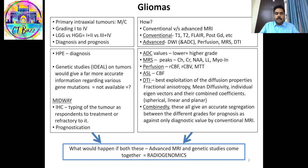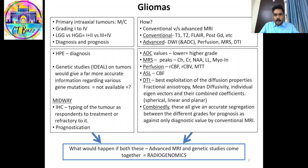Gliomas are the most common primary intraxial brain tumors, graded from grades 1 to 4, among which grades 1 and 2 belong to the low-grade category and grades 3 and 4 belong to the high-grade category. Imaging plays a crucial role in the diagnosis of these brain tumors, with the most important role played by conventional and advanced MRI techniques.